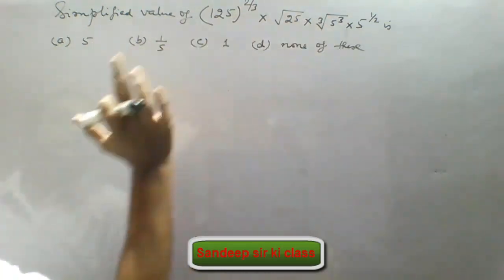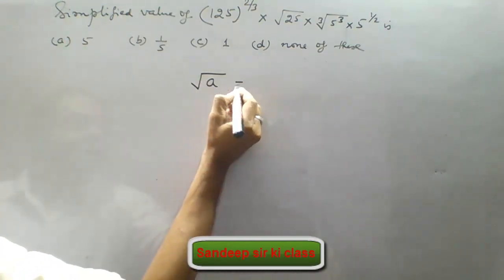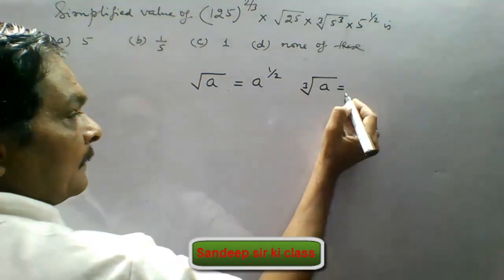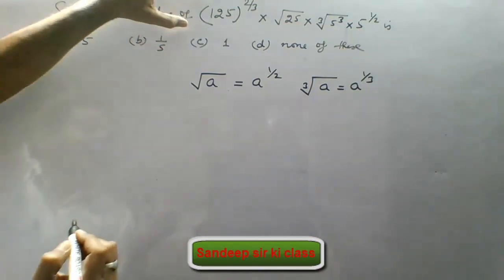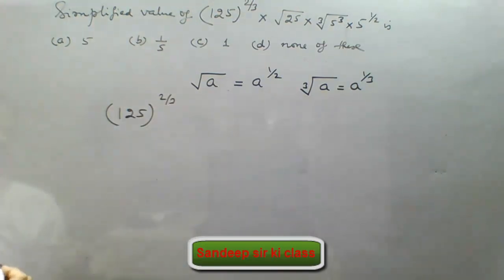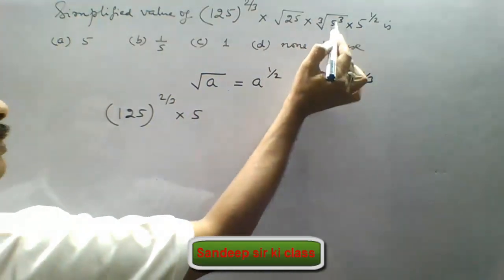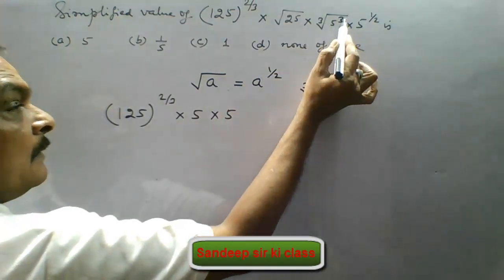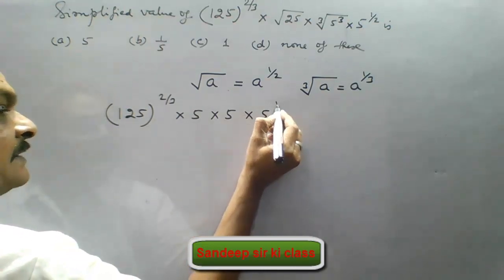Next question: find the simplified value of this expression and these are the options given to us. Now we know that under root of any number a means power 1 upon 2, and cube root of any number a means power 1 upon 3. So when we apply this here, the first term will be 125 to the power 2 upon 3. Second is under root 25, which is 5, to the power 3. Then cube root of 5 to the power 3 gives 5 because the power becomes 3 by 3 which is 1. So we directly write it as 5, and the 4th term is 5 to the power 1 upon 2.